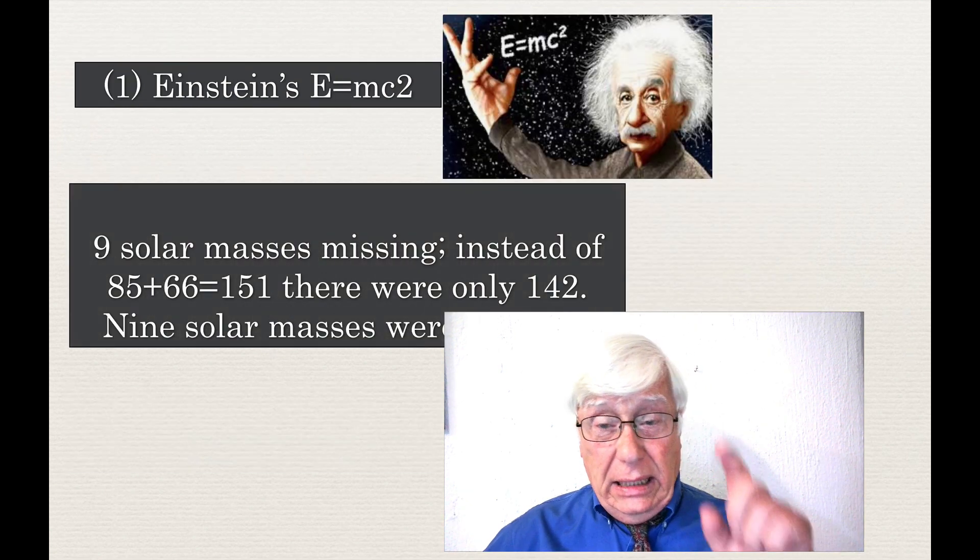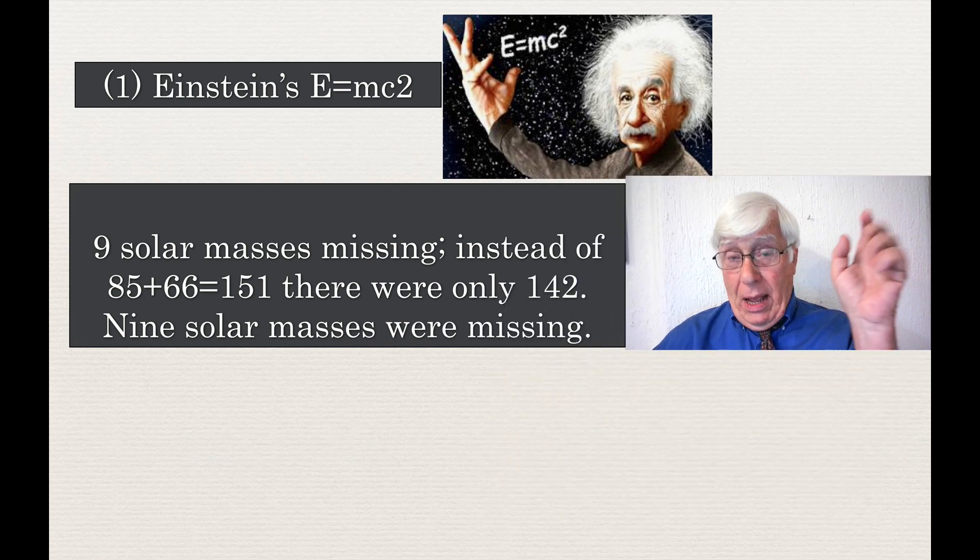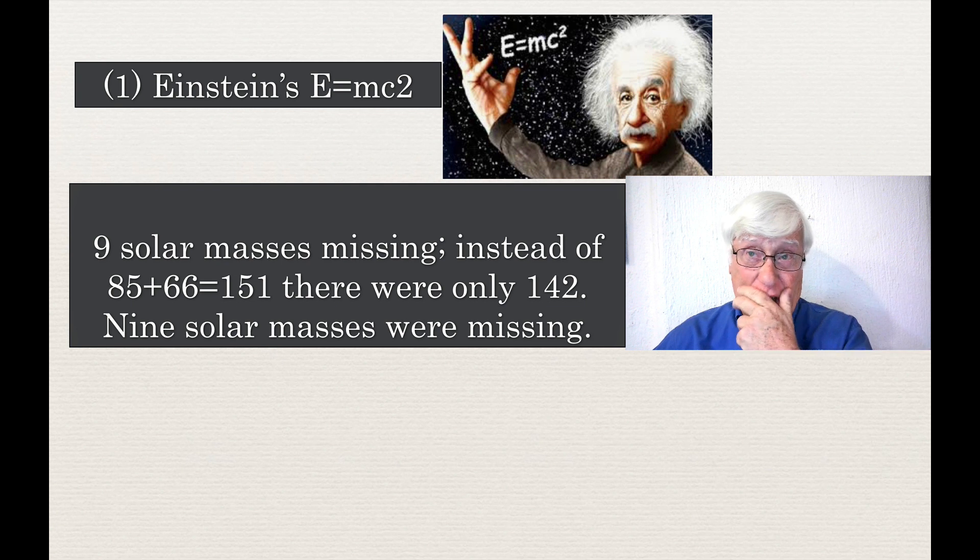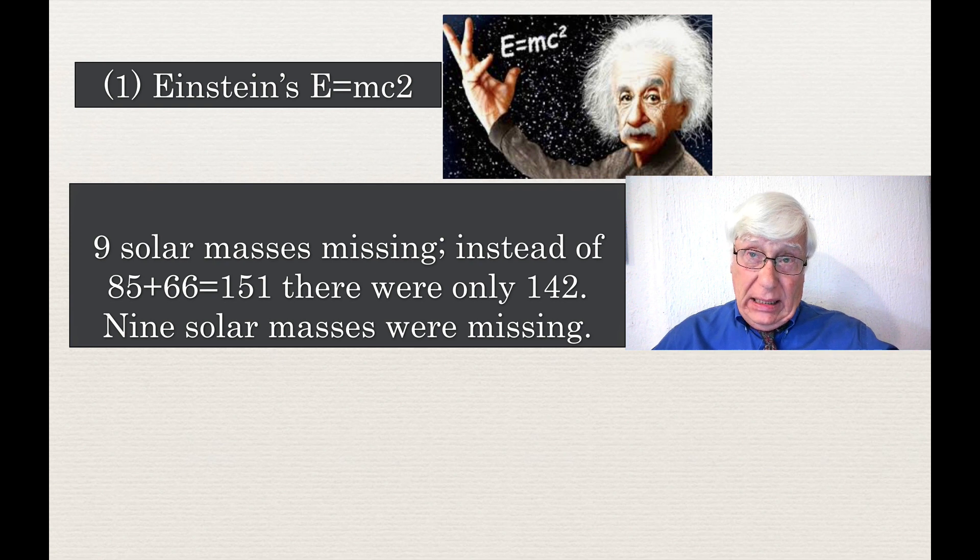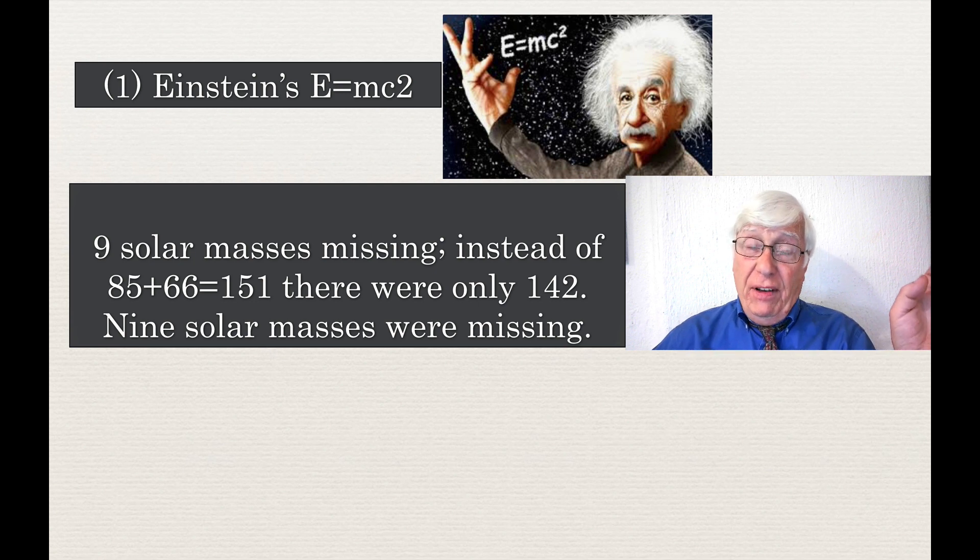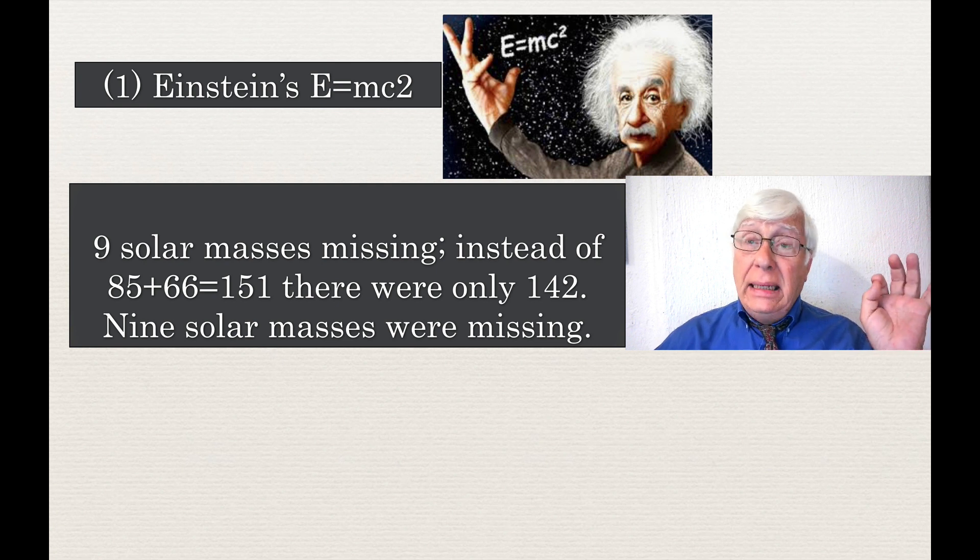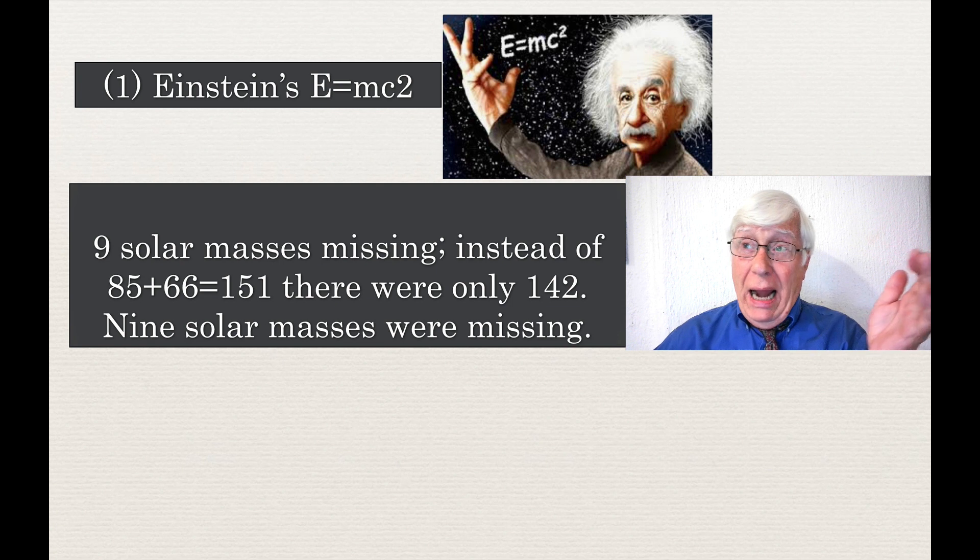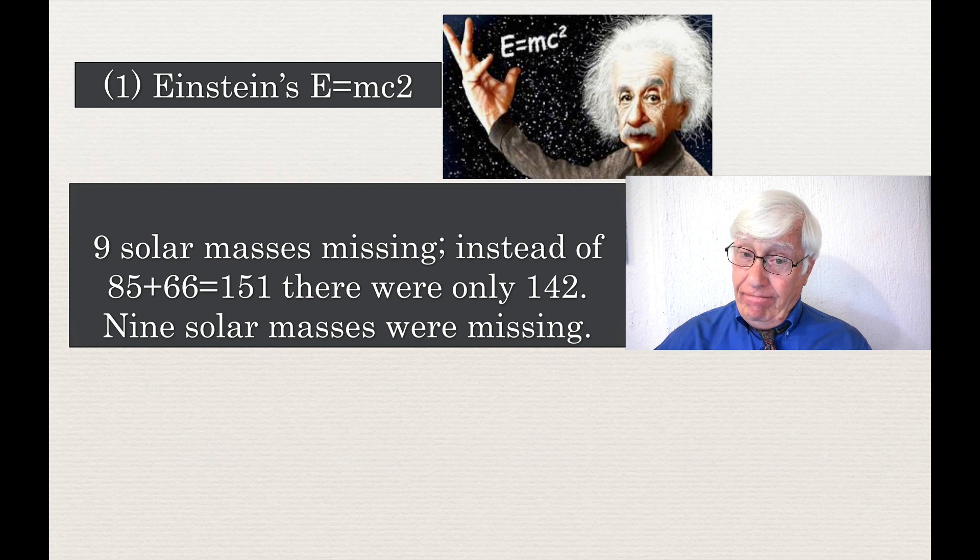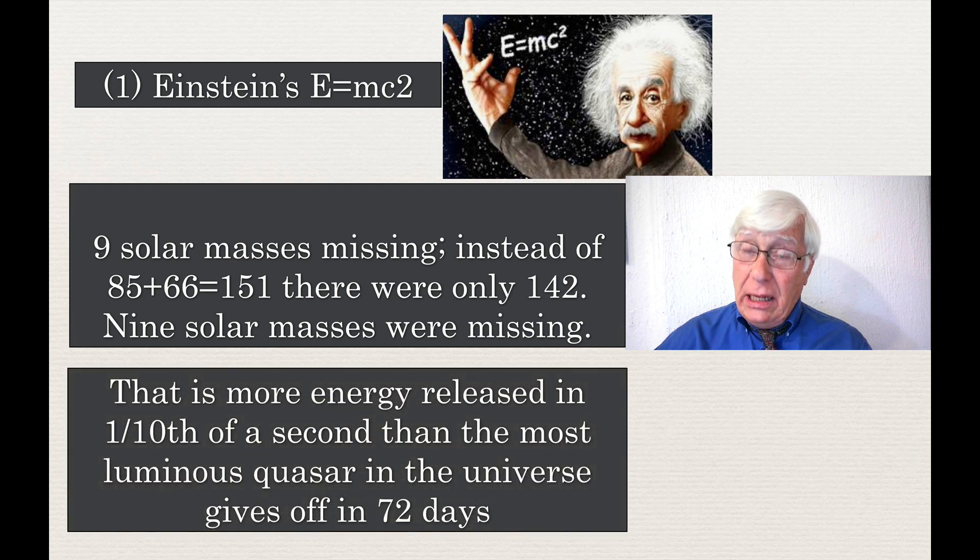Well, there are three reasons why this is a big deal. Here's why it is so weird, so eccentric, so different. First, Einstein's theory of relativity says that energy converts to mass and mass to energy. Nine solar masses are missing. We had a black hole of 85 solar masses combining with another one of 66. That should be 151, but it was only 142. Nine solar masses were missing. Nine suns were missing. What happened? According to Einstein's theory of relativity, they were converted to energy. There's more energy released in one-tenth of a second than the most luminous quasar in the universe gives off in 72 days. It was a big deal.